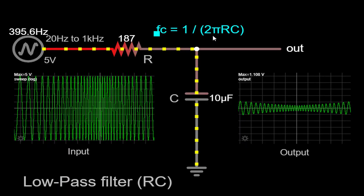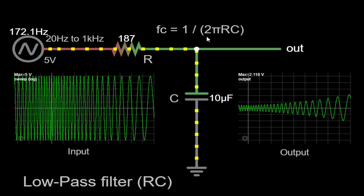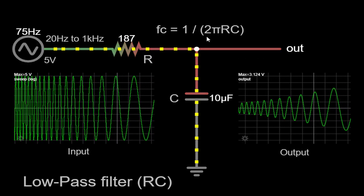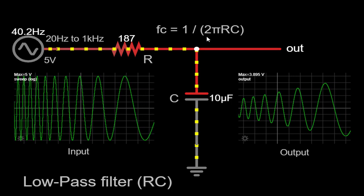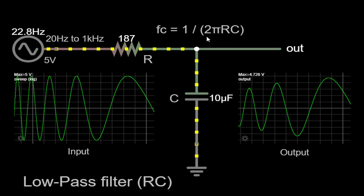A first-order RC filter has a slope of minus 20 dB per decade (6 dB per octave), meaning that for every tenfold increase in frequency beyond the cutoff, the signal amplitude is reduced by 20 dB. Higher-order filters can provide steeper roll-off characteristics.